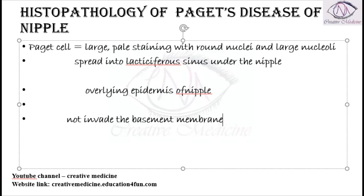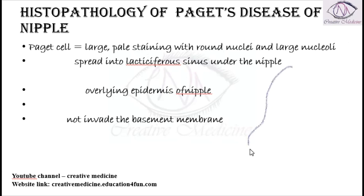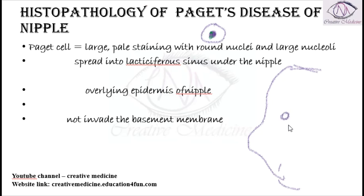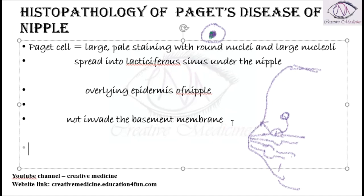As seen here, Paget's cells are round, large cells with a large nucleus in the center. These cells first invade the ducts of the nipple, then the lactiferous sinuses, and from there they go to the epidermis of the nipple, but do not invade the basement membrane. Because it does not invade the basement membrane, Paget's disease is classified as a carcinoma in situ.